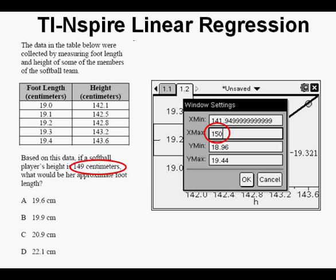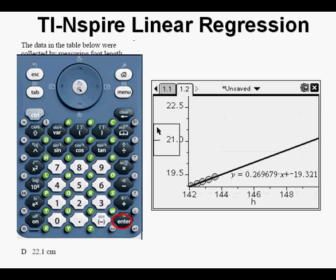so we press the tab key once so that X max is now highlighted as shown here. Now we'll enter 150 as X max. Next, we tab down twice to get Y max so it's highlighted. We have to change this to accommodate at least our largest possible answer choice which is D, 22.1 cm. So we enter 23 here for 23 cm. Press Enter.